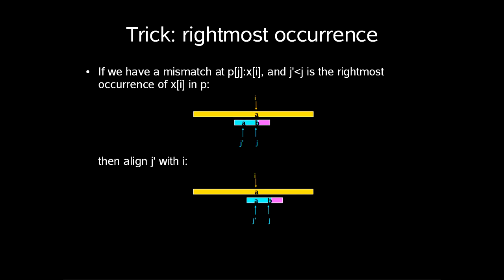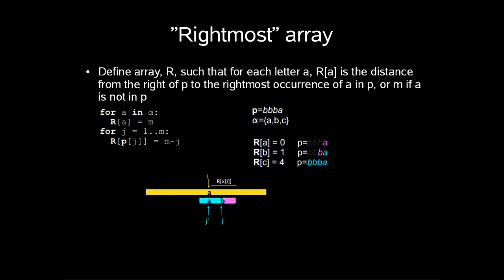The first trick is the rightmost occurrence. If we have a mismatch at p[j] and x[i], and j prime is less than j, which is the rightmost occurrence of the character x[i] in p, then we align j prime with i. We build what is called the rightmost array. We define array r such that for each letter a, r[a] is the distance from the right of p to the rightmost occurrence of a in p, or m if a is not in p.